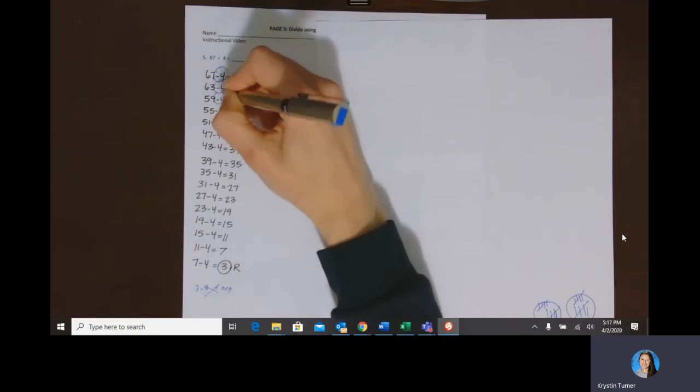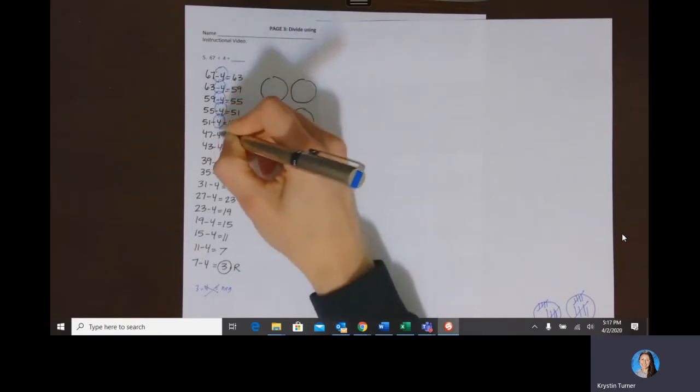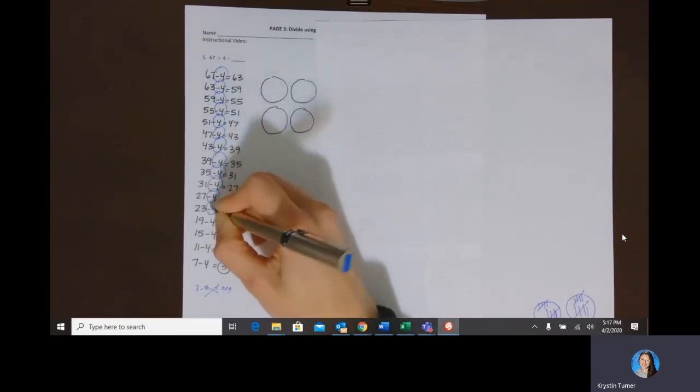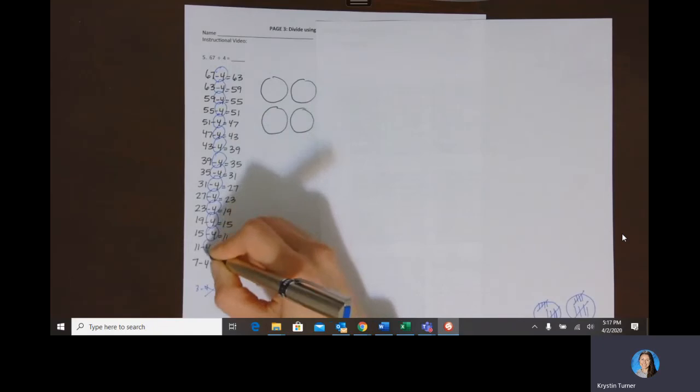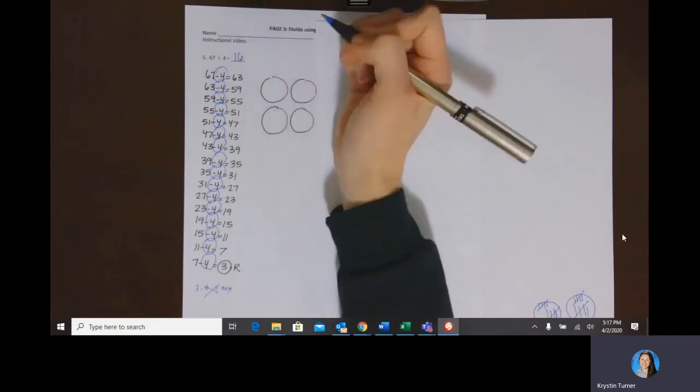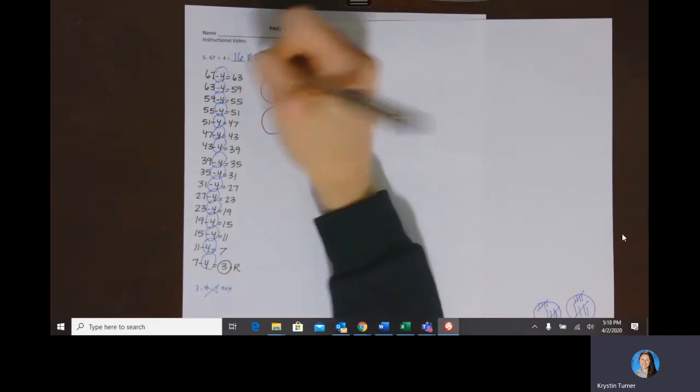So if I'm counting how many total I have, I have 1, 2, 3, 4 groups, 5, 6, 7, 8, 9, 10 groups, 11, 12, 13, 14, 15, 16 groups of four with a remainder of three.